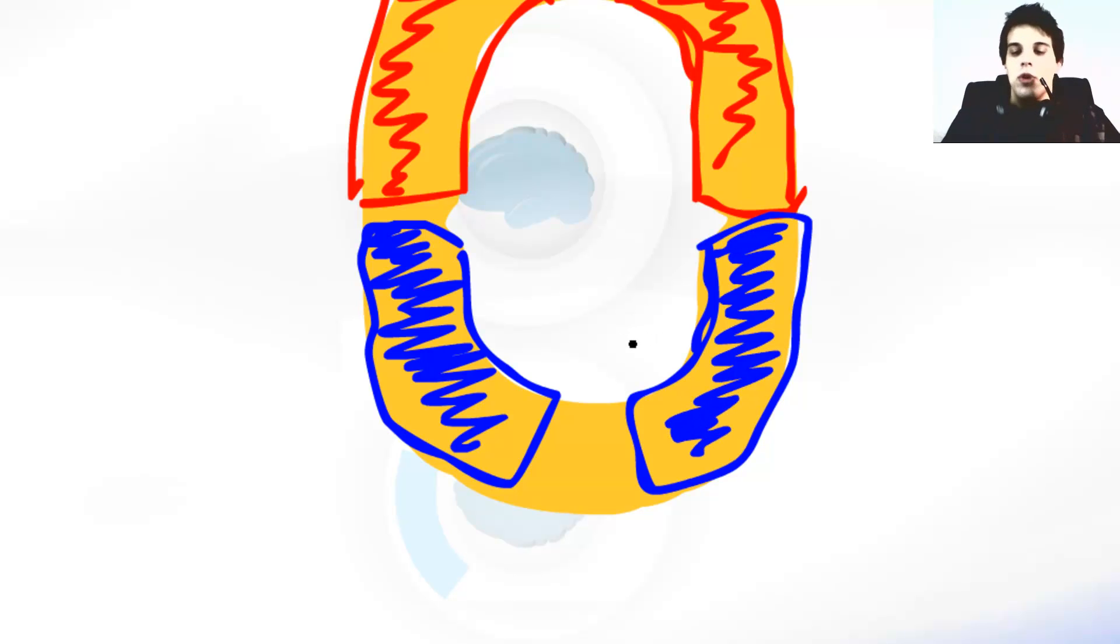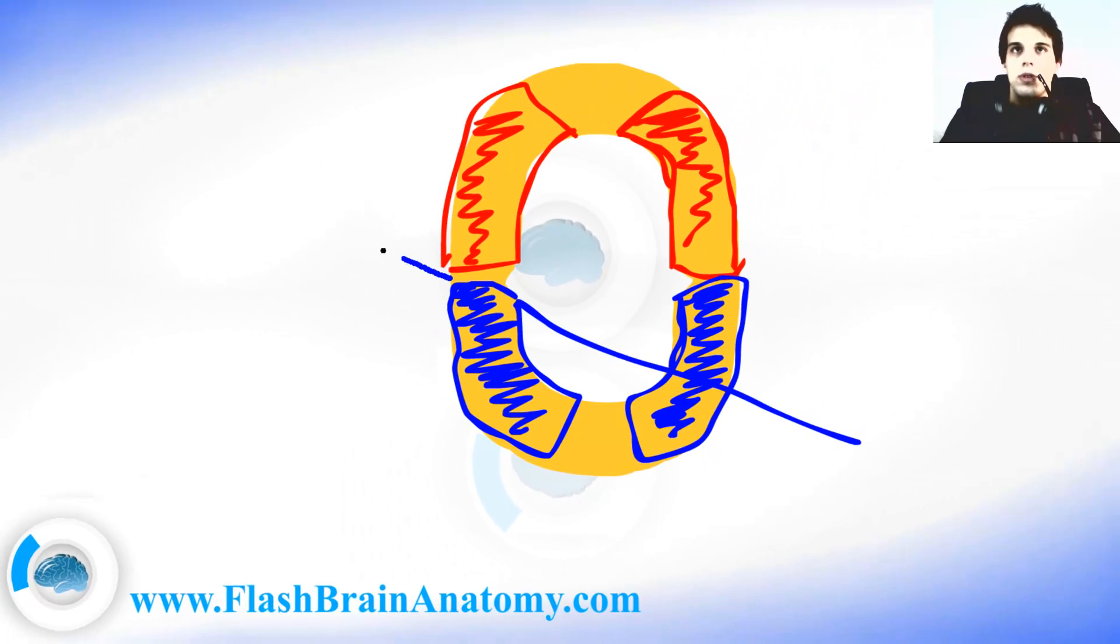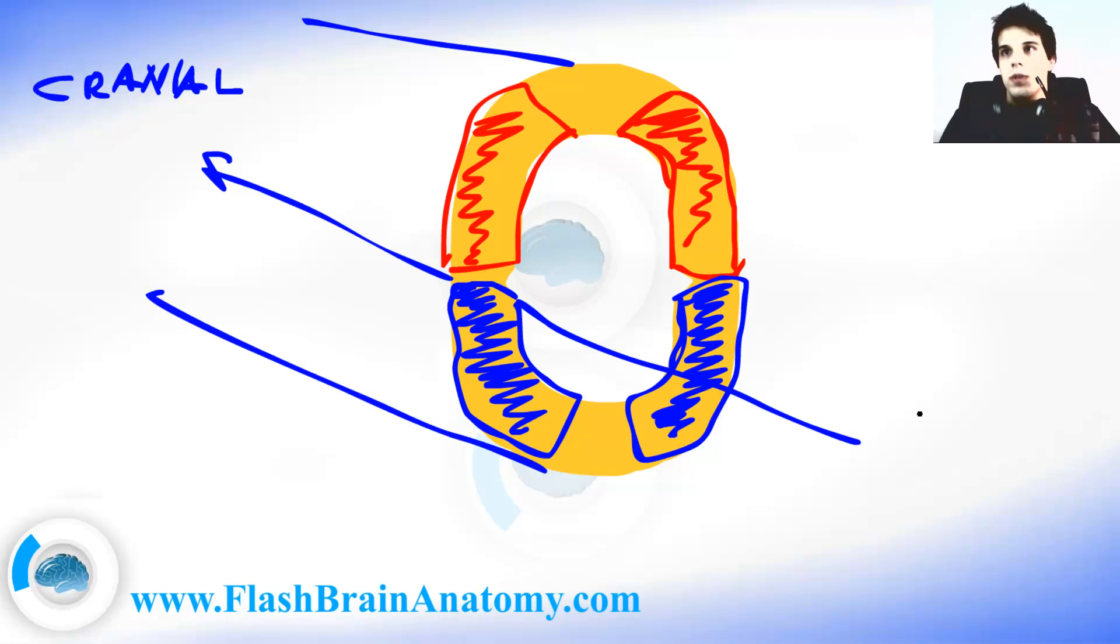The basal plate is important for motor functions of the brain. Now if we look at the neural tube from this direction, and the neural tube continues on to go like this, let's say this is the cranial direction, and this over here was the caudal direction.